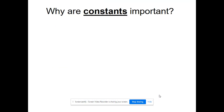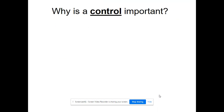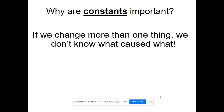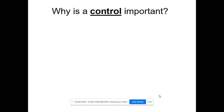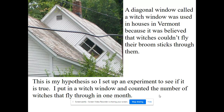Constants are important because if you change a bunch of things, you don't really know what caused the effect you're looking for. In an experiment, we want to keep as much constant as we can so we only change one thing.